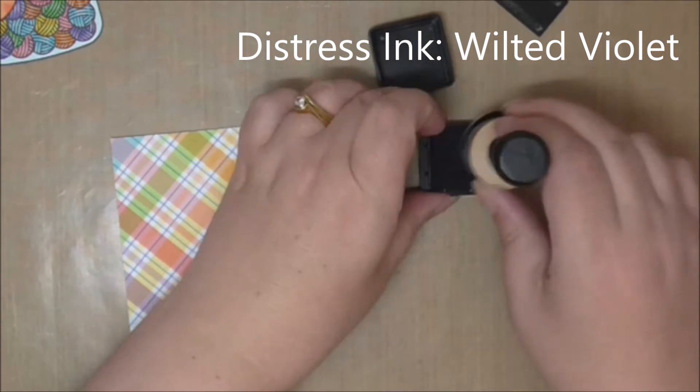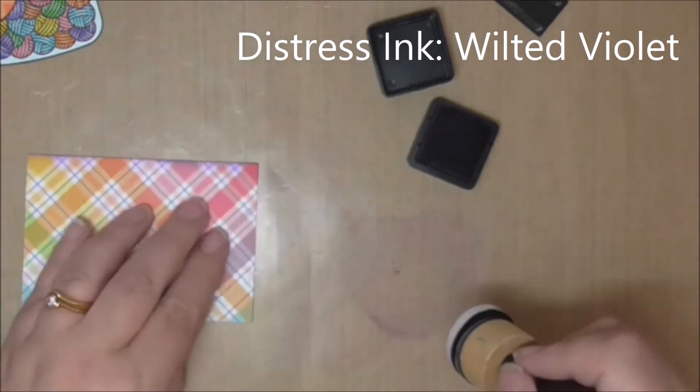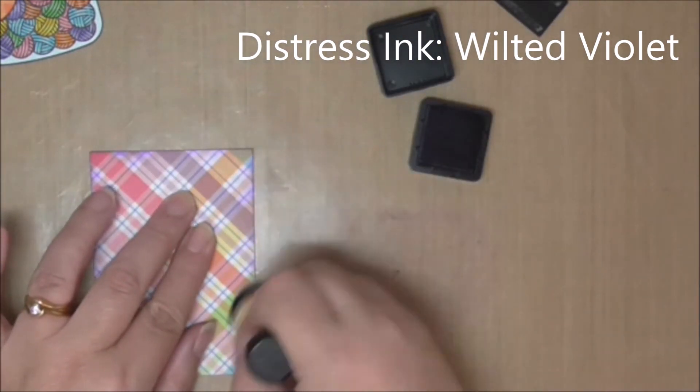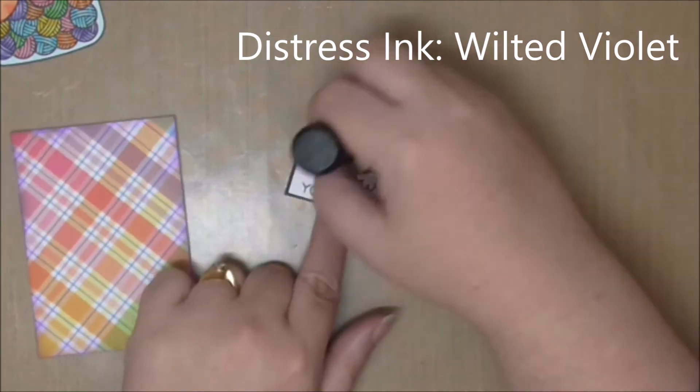You can use scissors, sometimes I do. And I did think it needed a border so I'm using Wilted Violet distress ink just to create a bit of a visual border around the whole card.